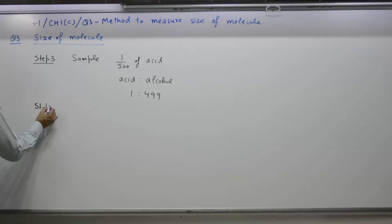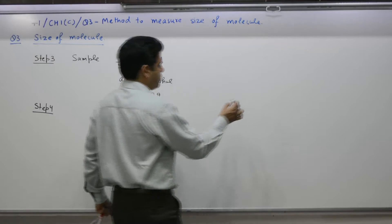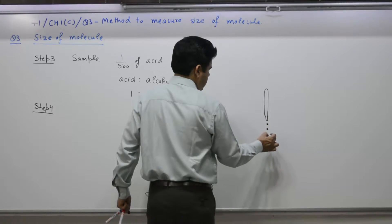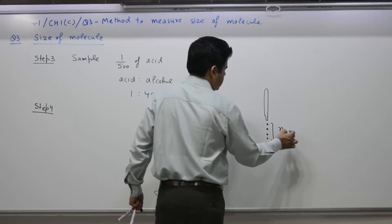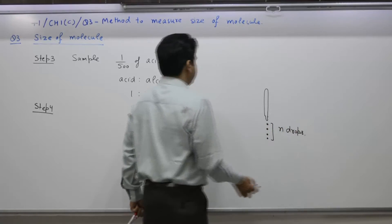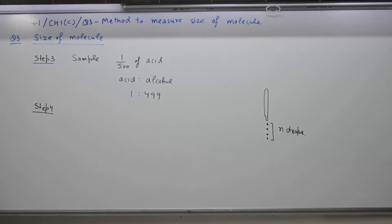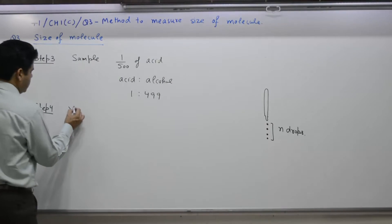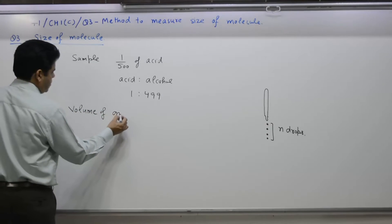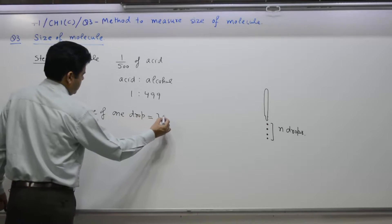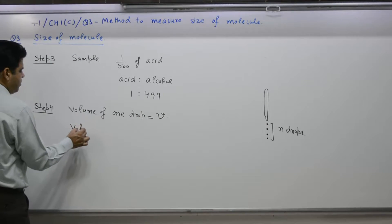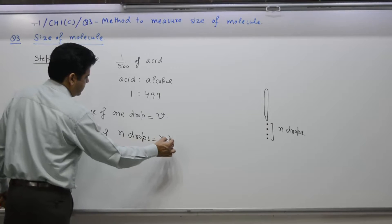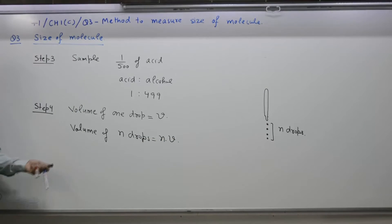Step 4: Using a dropper, take n drops of this solution. Each drop has a volume of v. So the total volume of n drops is nv.